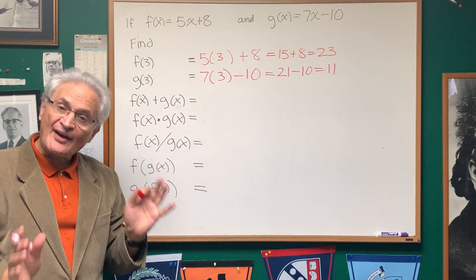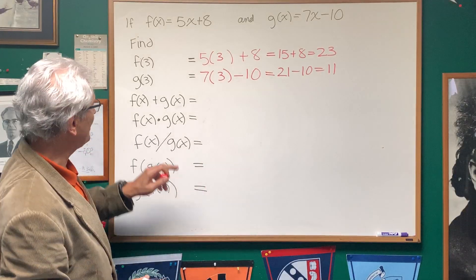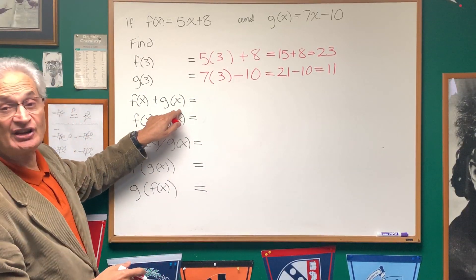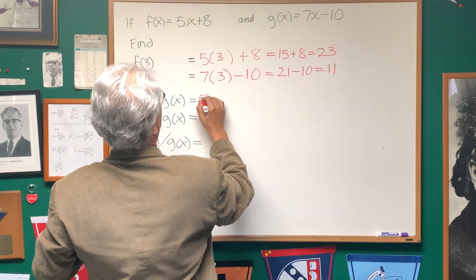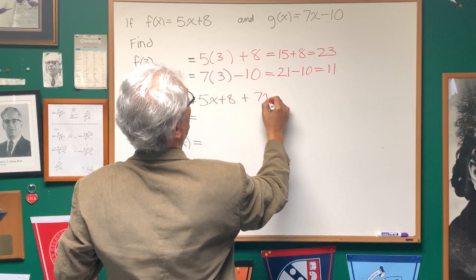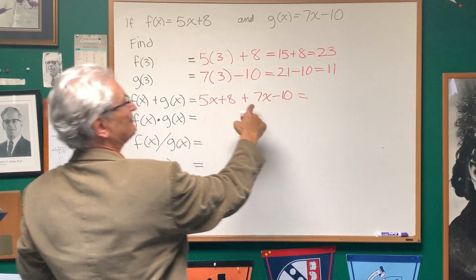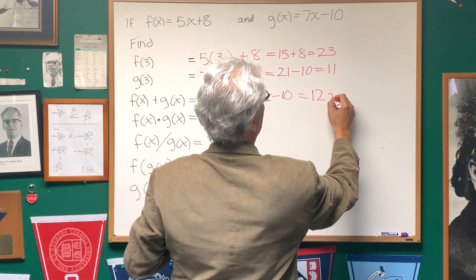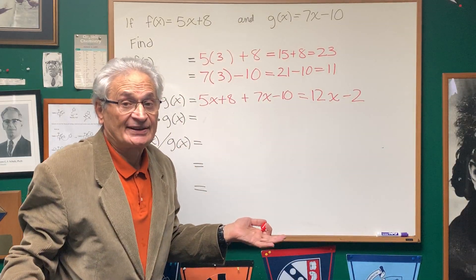Now if you're ever asked to do other manipulations with two functions and function notation, f(x) plus g(x), that's simply the sum of the two functions. In other words, we take the definition of f(x) and add it to the definition of g(x), and what will we get? 5x plus 7x is 12x, and 8 minus 10 is minus 2. It's as simple as that.